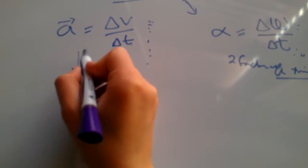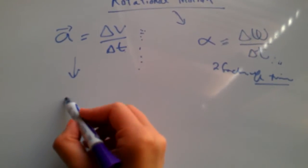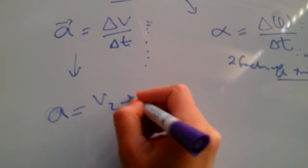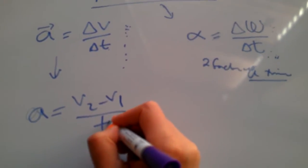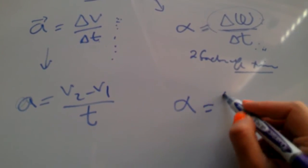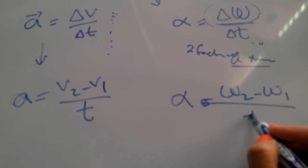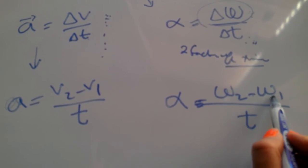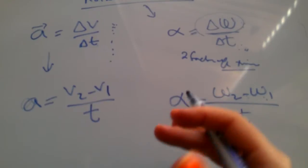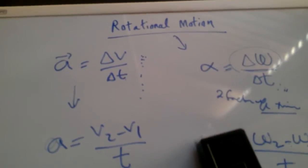We can write linear acceleration as (v2 minus v1) over t. Similarly, we can write alpha as (omega_2 minus omega_1) over t, or equivalently (omega_f minus omega_i), final minus initial angular velocity divided by time.